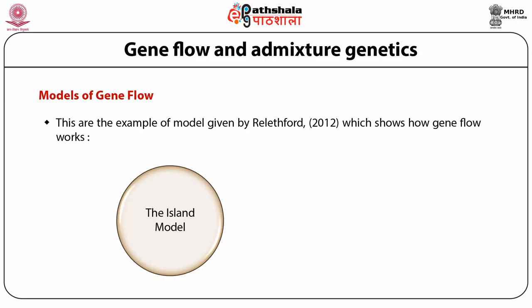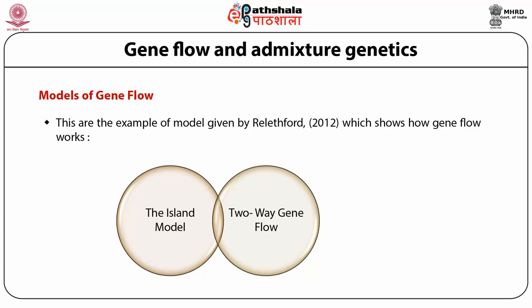Another model is two-way gene flow. The island model focuses on gene flow in one direction and allele frequency does not change in the source population, that is the mainland, or in terms of population genetics, the metapopulation. Although this model fits some cases, a model that allows gene flow in two directions is more applicable to many situations. In short, where the island model is only one-directional exchange of genes, two-way gene flow is bidirectional in nature.